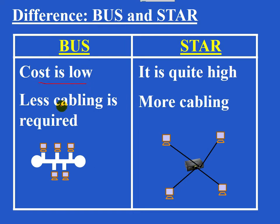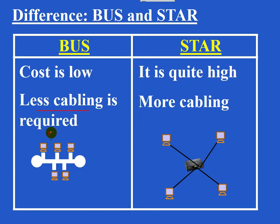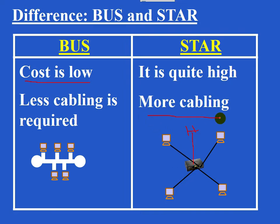Cost is low in BUS topology because less cabling is required. If you want to add a new host, it simply connects to the central cable, so you need only one cable — thereby the cost is less. In star topology, the cost is quite high and more cabling is required, because every host must connect to the central hardware device known as the SWITCH.